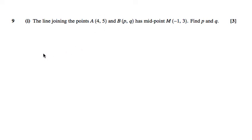Part 1 has given us these two points A and B, and it says that M is the midpoint of them. It tells us what M is, but it doesn't tell us what B is, and it wants us to find the coordinates of B.